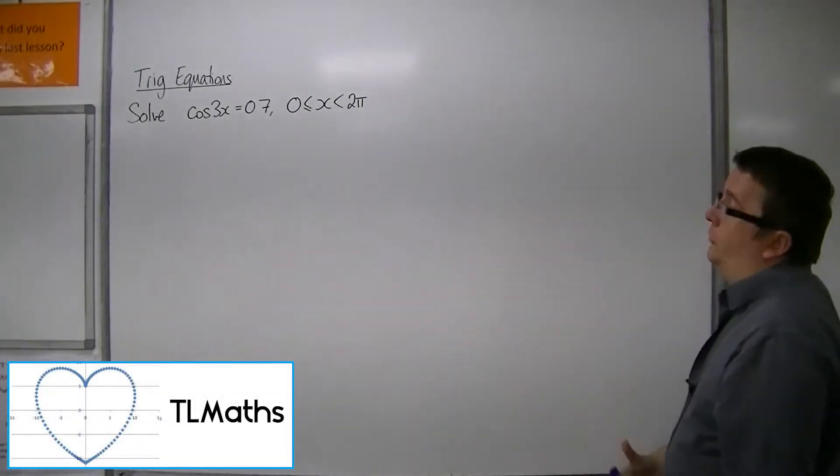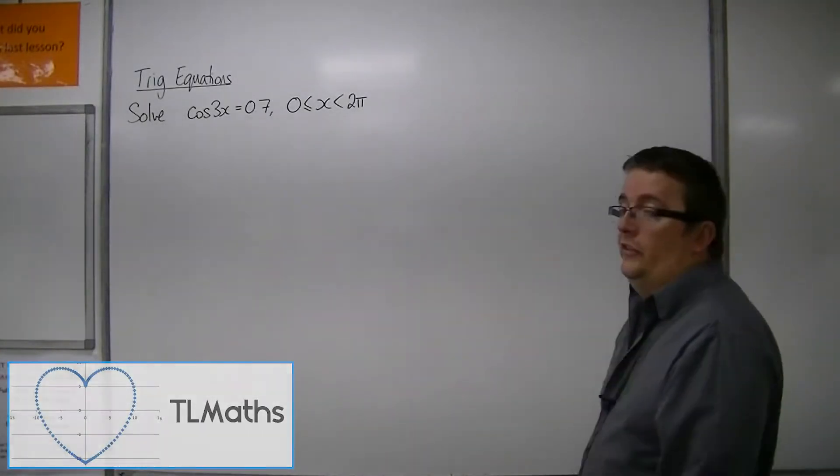In this video we're going to solve cos(3x) = 0.7 between 0 and 2π radians.